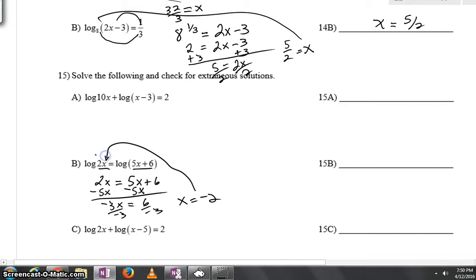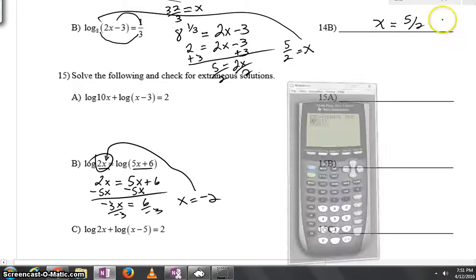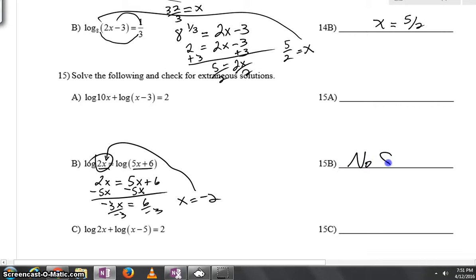However, here we can see we have a problem. 2 times negative 2 is negative 4 and we're not allowed to plug negatives inside of logs. When we try we'll get an error message. This problem is the reason why we do a check. There's going to be no solution.